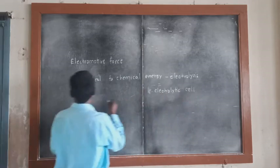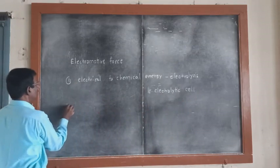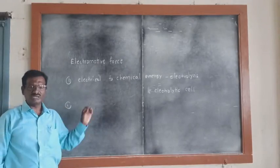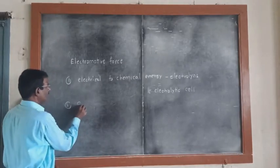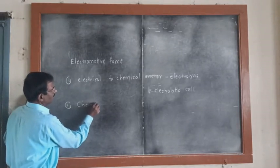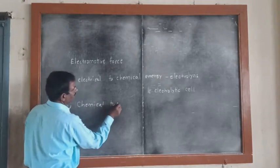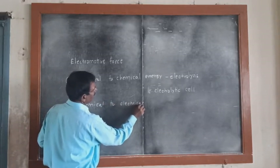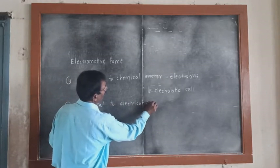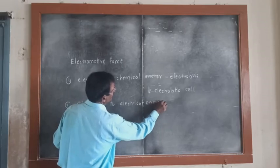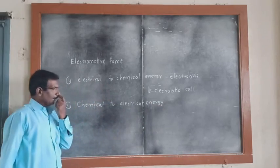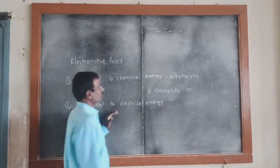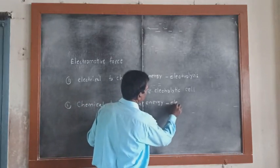Second, a process in which chemical energy is converted into electrical energy. And the device in which this process is carried out is called as electrochemical cell.